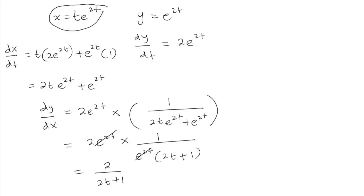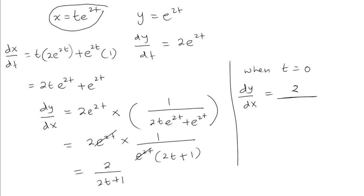Don't forget to substitute the value of t. When t equals 0, our dy/dx equals 2 over 2 times 0 plus 1, so the answer is 2.